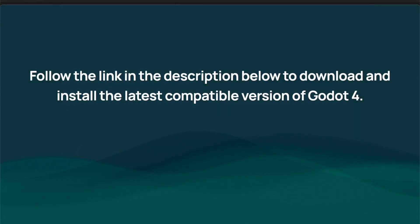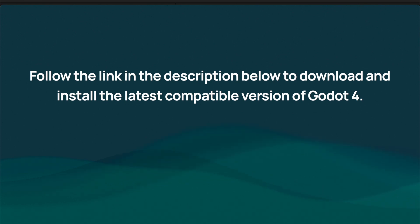The first step in creating our game in Godot 4 is downloading and installing the editor itself. You can find a link in the description to download the latest version that's compatible with this course. Once there, download the zip file for your operating system of choice and extract it to somewhere on your computer.